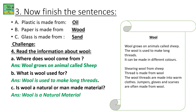Challenge: Read the information about wool. Where does wool come from? Wool grows on an animal called sheep. What is wool used for? Wool is used for making long threads. Is wool a natural or manmade material? Wool is a natural material.